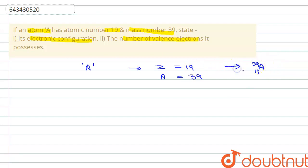Now they have asked us to write its electronic configuration. So the atomic number Z represents the number of electrons or number of protons in an atom. So we can write down the electronic configuration of atom A using the atomic number.